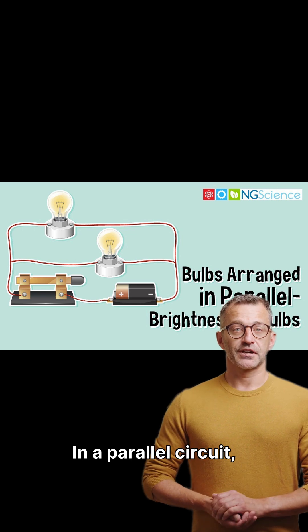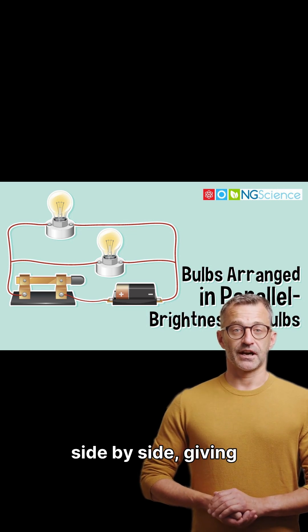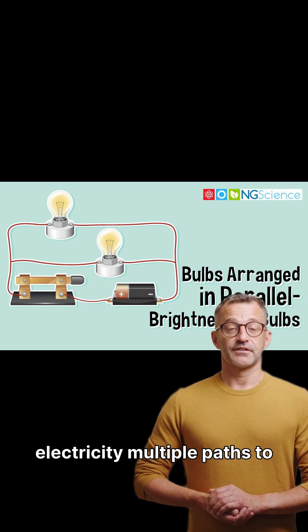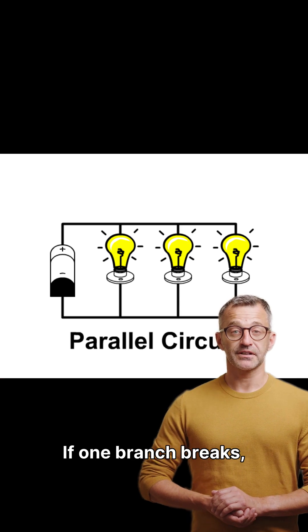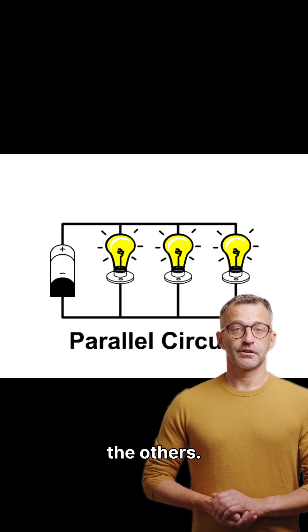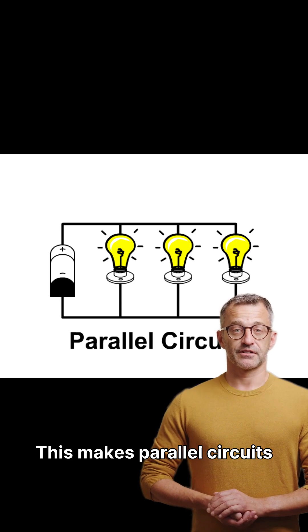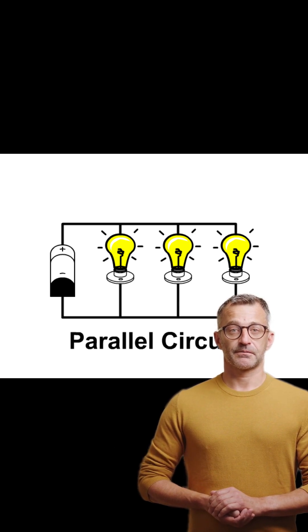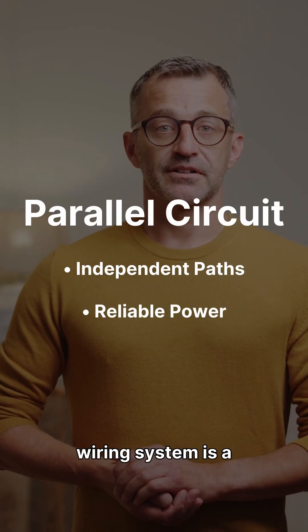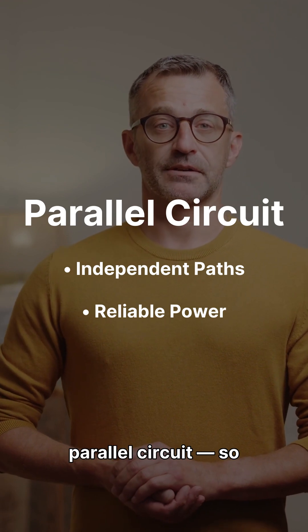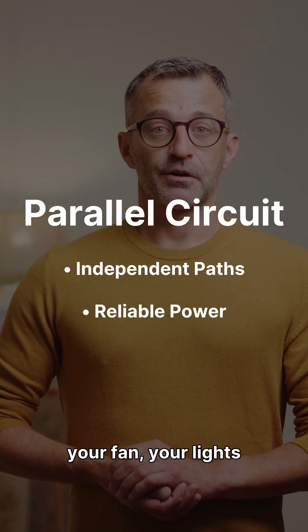In a parallel circuit, each device is connected side by side, giving electricity multiple paths to flow. If one branch breaks, current still flows through the others. This makes parallel circuits more reliable and efficient. In fact, your home wiring system is a parallel circuit. So when you switch off your fan, your lights still work.